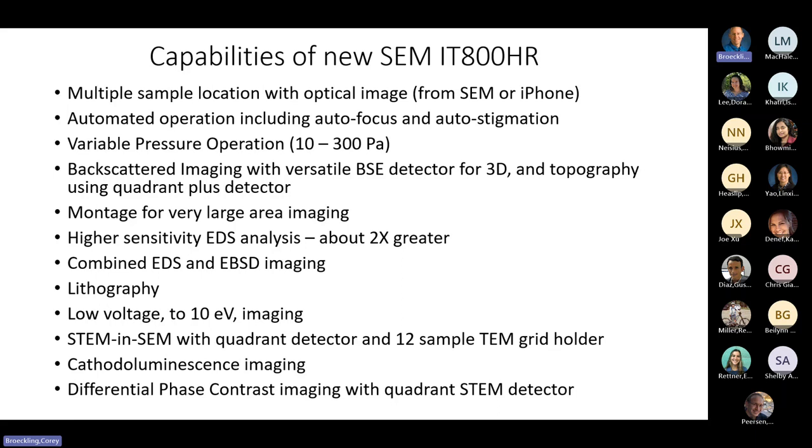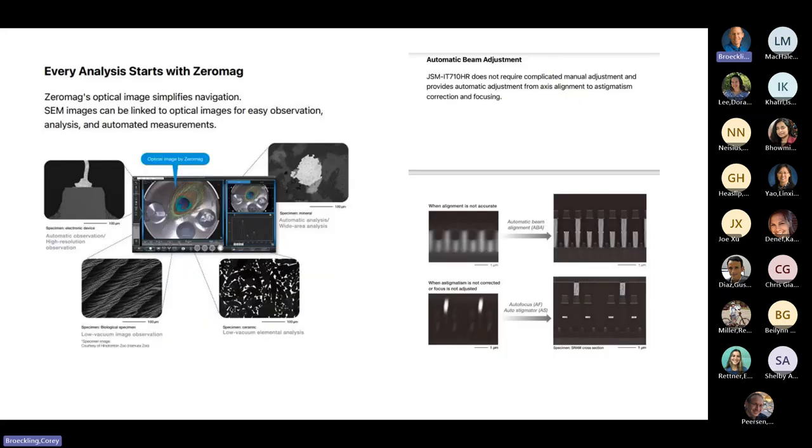One of the big pushes is low voltage imaging, down to 10 eV imaging. That's substantial. Now, we'll see how well it works, but that's what they claim. The big thing that I'm excited about is DPC, differential phase contrast imaging, which can be applied to things that have different electric or magnetic fields. And we will have cathodoluminescence, which is pretty exciting too.